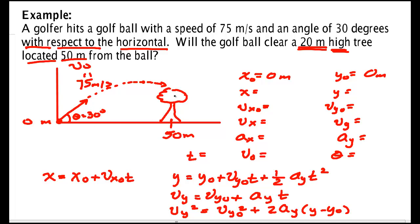Looking at my diagram I then fill out some things. So initially it's at zero meters in the X and zero meters in the Y. Later on I'm going to be at the tree's location, that's 50 meters. I don't know how high the golf ball is. That's what I want to find out.